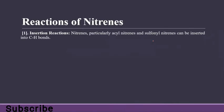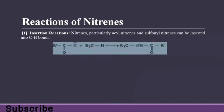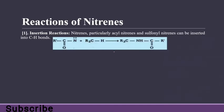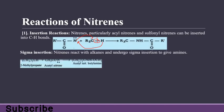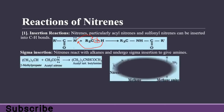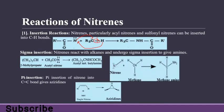Reactions of nitrines — insertion reaction: nitrines, particularly acyl nitrines and sulfonyl nitrines, can be inserted into C–H bonds. First, there is migration of the proton to the nitrogen, then nitrogen forms a bond with the carbon and inserts into the C–H bond. This is sigma insertion. Nitrines can also insert into a double bond, which is pi insertion.